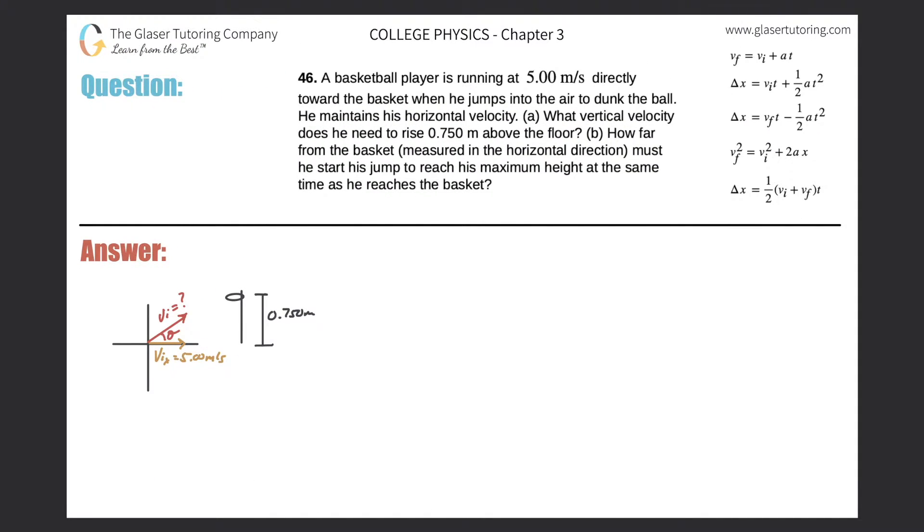Number 46, a basketball player is running at five meters per second directly toward the basket when he jumps into the air to dunk the ball. He maintains his horizontal velocity. What vertical velocity does he need to rise 0.75 meters above the floor?